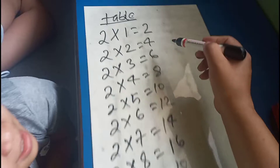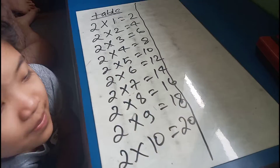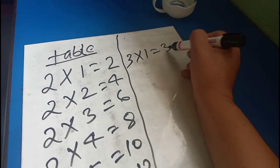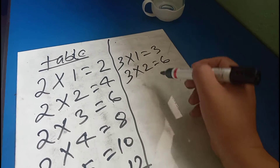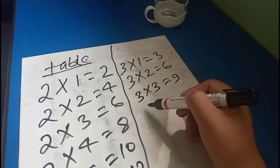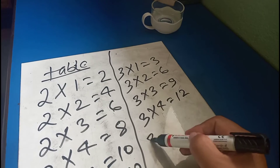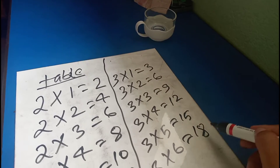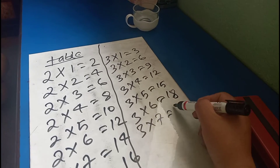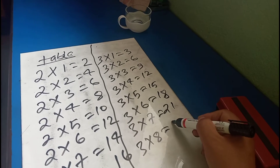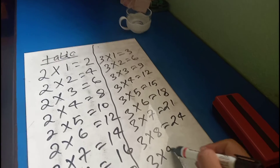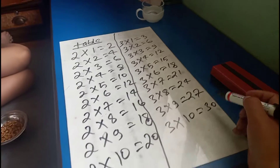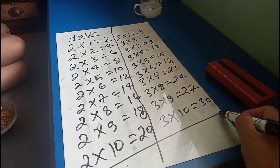Three one is three, three two is six, three three is nine, three four is twelve, three five is fifteen, three six is eighteen, three seven is twenty-one, three eight is twenty-four, three nine is twenty-seven, three ten is thirty. 1, 2, 3, 4, 5, 6, 7, 8, 9, 10. Okay.